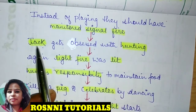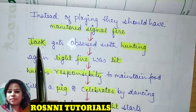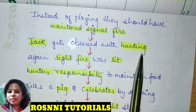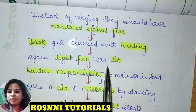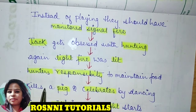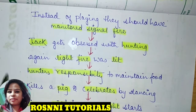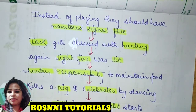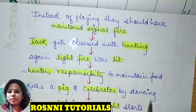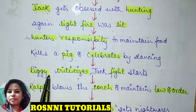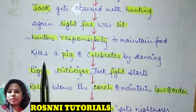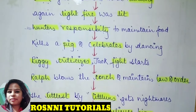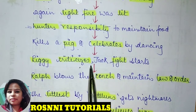Jack became obsessed with hunting. He was unable to kill a pig on his first attempt, which made him very determined. They lit the fire again using Piggy's glasses. Eventually the hunters killed a pig and celebrated by dancing. They roasted it and celebrated their successful hunt.